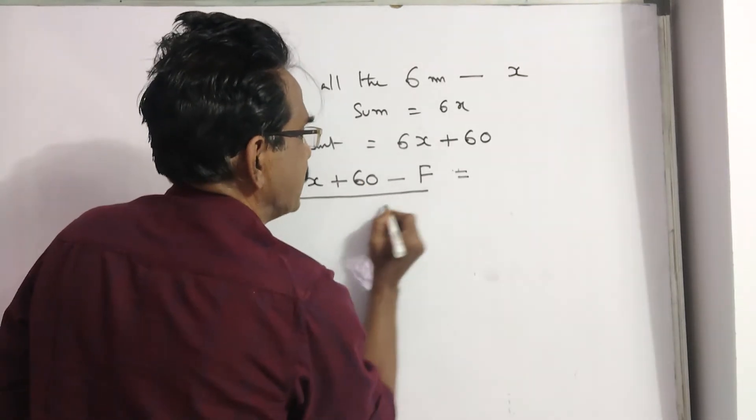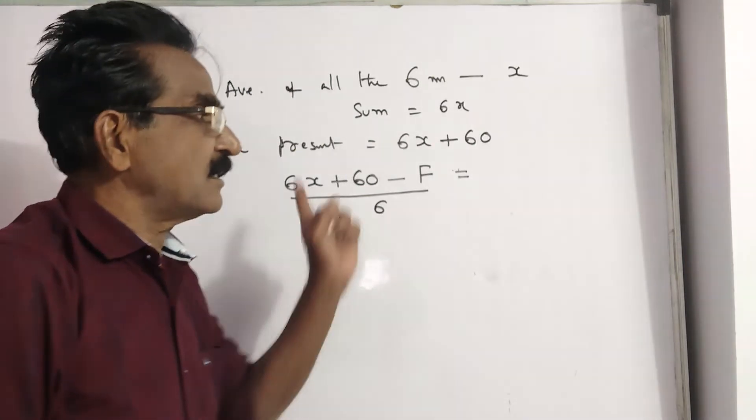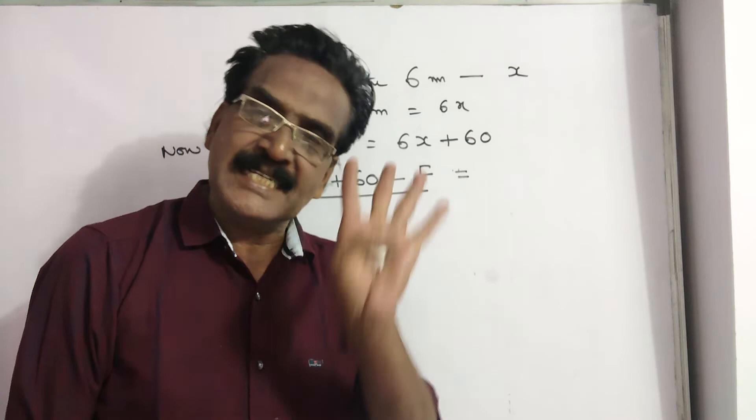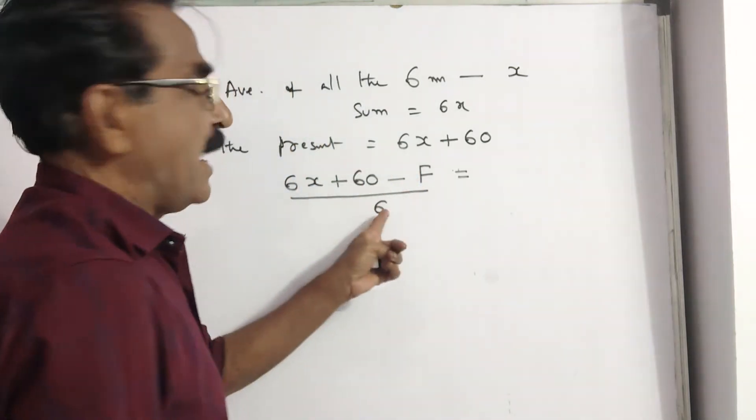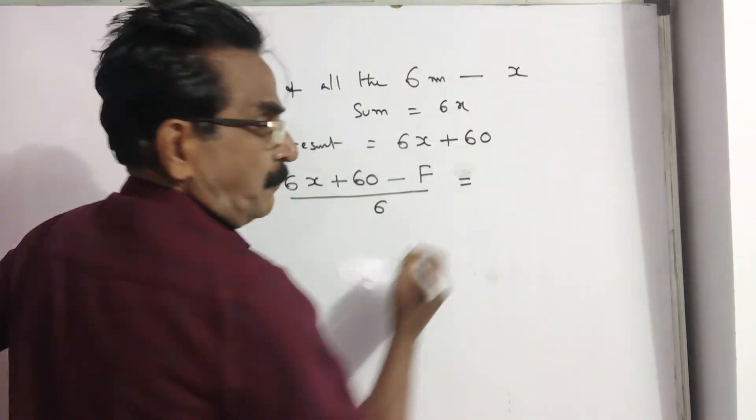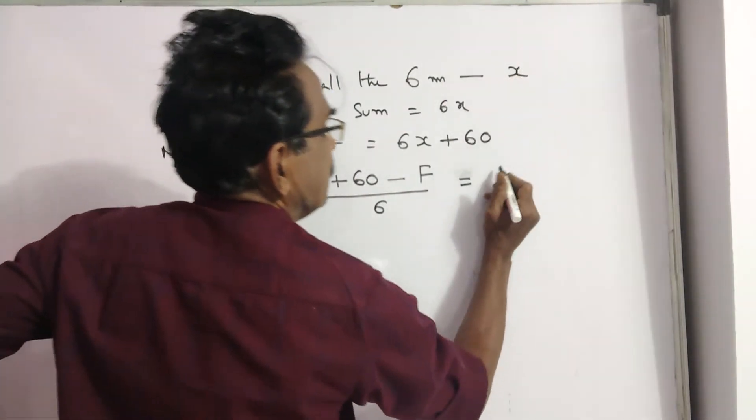And by dividing by 6, we get the average. Father died and baby born, so the total number of members is 6. Average is this. According to the problem, the average is same as today. That is, X.